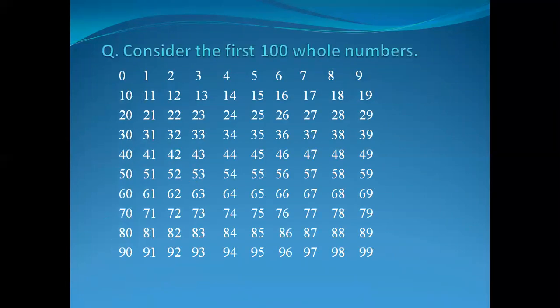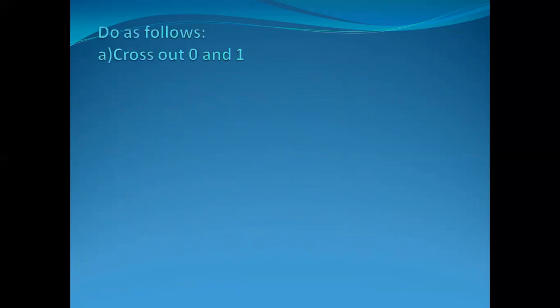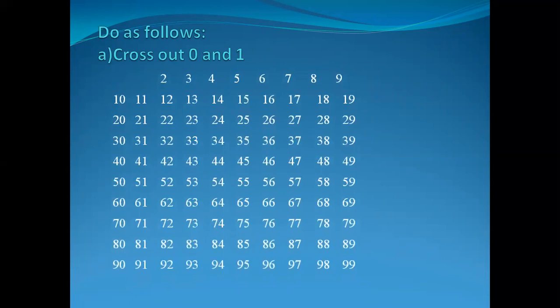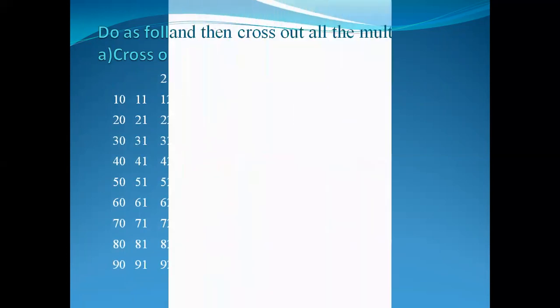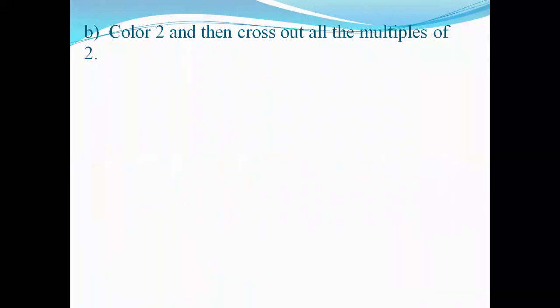Now we have a grid of whole numbers from 0 to 99. The instructions are: first, cross out 0 and 1. Next, color 2 and then cross out all the multiples of 2 in the grid.